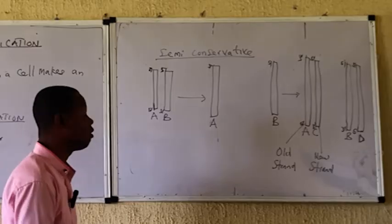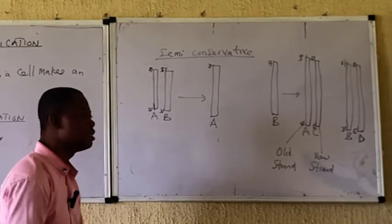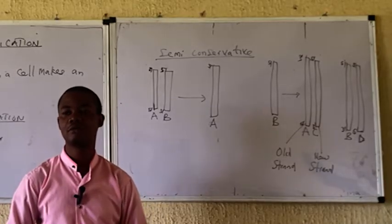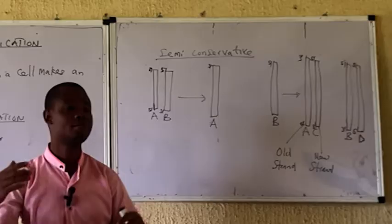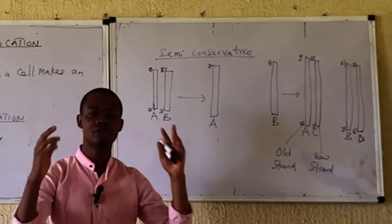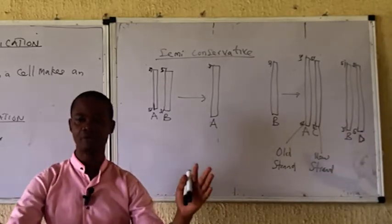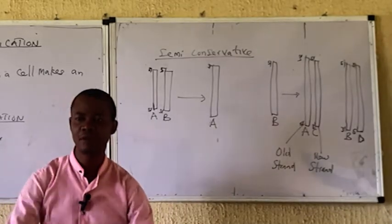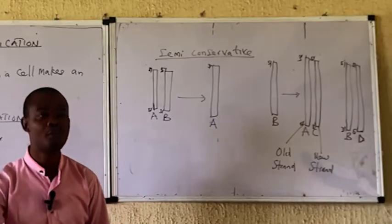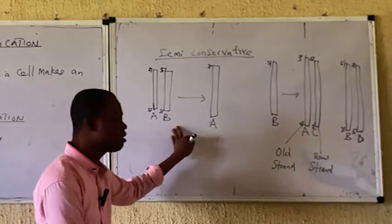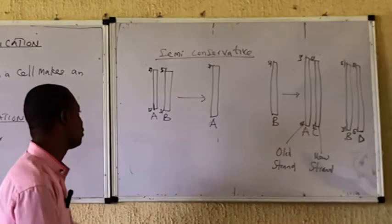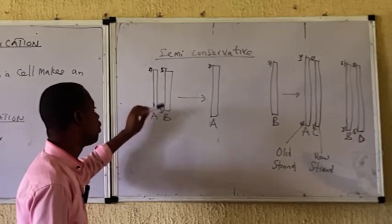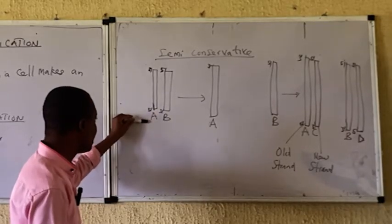What is the semi-conservative model of DNA replication? In the semi-conservative model, the process includes the strands of DNA separating from one another. When they separate, these strands will now act as a template for a new complementary strand. Let's use this diagram to explain. This is a DNA molecule with two strands — strand A and strand B.